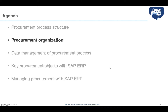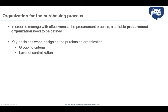The second aspect relevant to understanding procurement in SAP is procurement organization. When we discuss procurement organization, there are two important aspects to clarify: the grouping criteria — the approach used in grouping and organizing resources within the purchasing department — and the level of centralization.